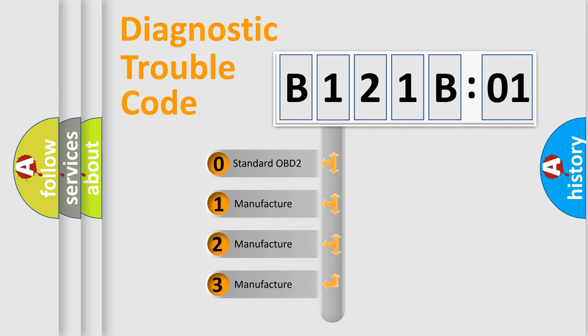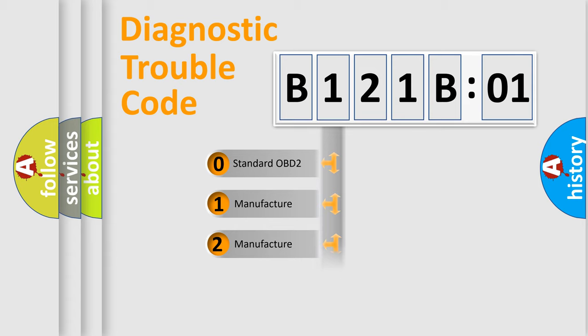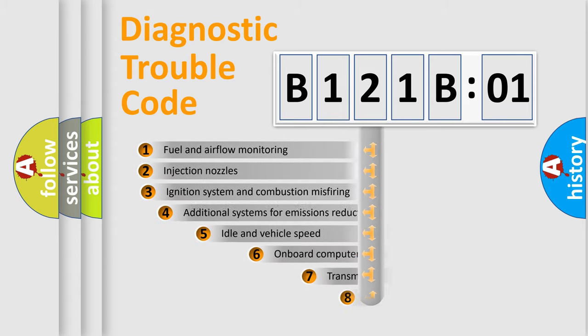If the second character is expressed as zero, it is a standardized error. In the case of numbers 1, 2, or 3, it is a more specific expression of a car-specific error.